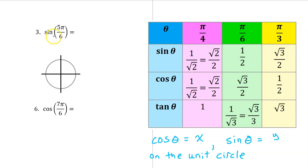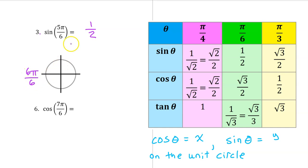For number 3, the sine of 5 pi over 6 will be the same as the sine of pi over 6, which is 1 half — except it might be negative depending on the quadrant. We know that pi can be thought of as 6 pi over 6. Therefore, 5 pi over 6 is one multiple before 6 pi over 6, putting it in the second quadrant. Sine is the y value, and y values are positive in the second quadrant, so we leave the answer as positive 1 half.